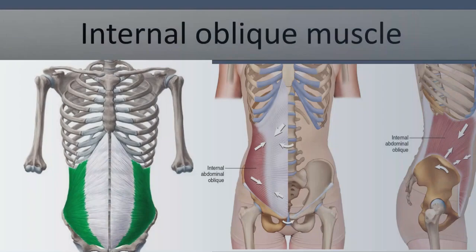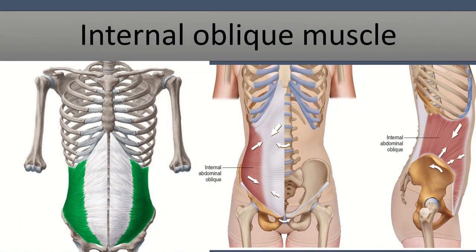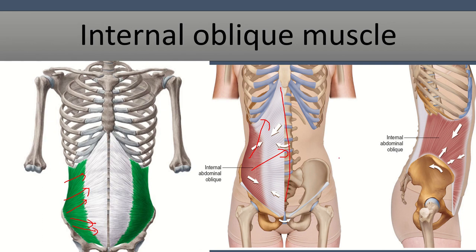The next muscle is the internal oblique muscle. From this picture we can see these are the internal oblique muscle fibers. We can see the aponeurosis of the internal oblique muscle here. In another lateral view, we can see the internal oblique muscle and its fiber direction — in an oblique direction. It lies below the external oblique muscle. Its fibers insert in the linea alba through the aponeurosis.